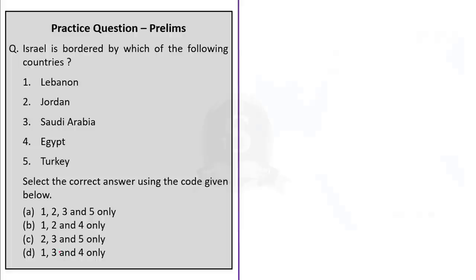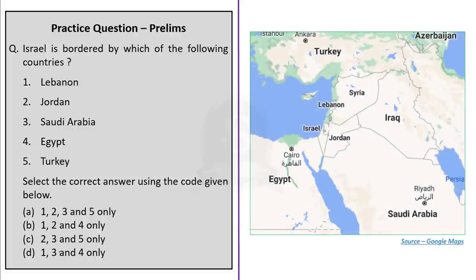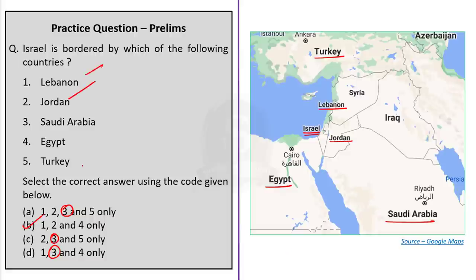Practice question 3: Israel is bordered by which of the following countries? 1. Lebanon, 2. Jordan, 3. Saudi Arabia, 4. Egypt, 5. Turkey. Option A: 1, 2, 3 and 5 only. Option B: 1, 2 and 4 only. Option C: 2, 3 and 5 only. Option D: 1, 3 and 4 only. The correct answer is Option B — 1, 2 and 4 only. Israel is bordered by Lebanon, Jordan and Egypt. Turkey is far away from Israel and Saudi Arabia does not share a border with Israel.